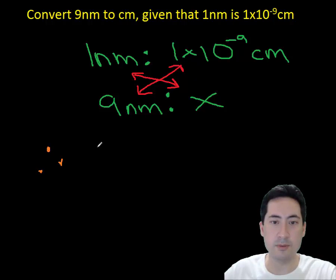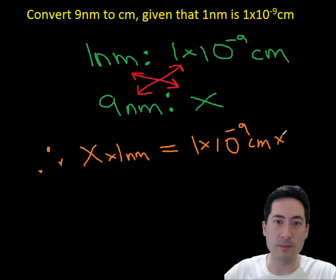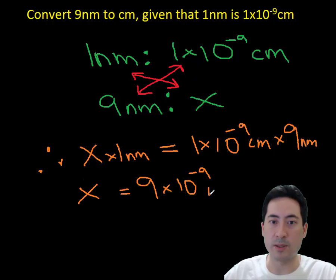So going back to the problem, here I have the ratios all set out. I'll then cross multiply them out, and there we get x equals 9 by 10 to the minus 9 centimeters.